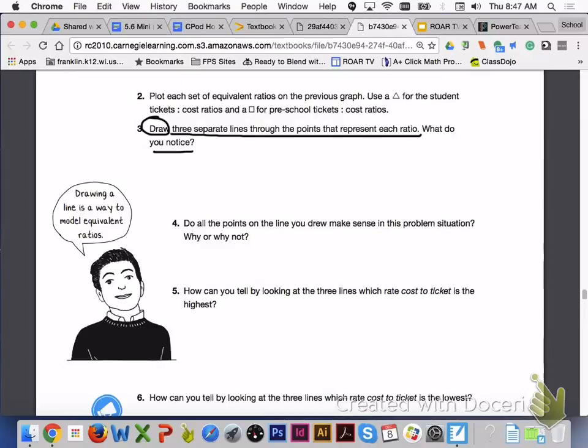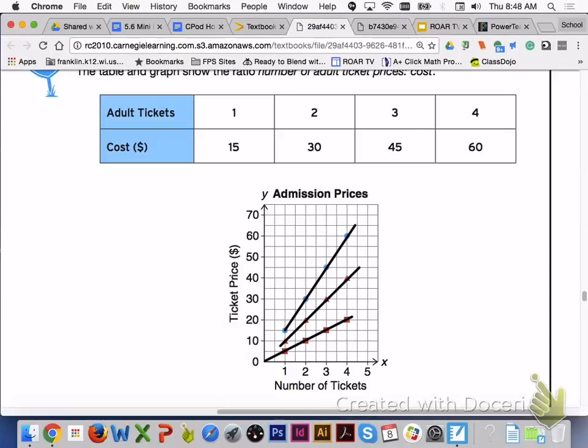Please answer number 3 with your group members. For number 3, you can see that each set of ratios does indeed form a straight line. And you can see that the lines, because of the different cost to ticket price difference, are going to have a different steepness.